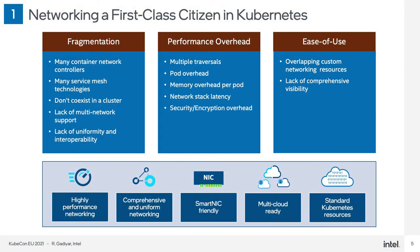Let's talk about Kubernetes networking. There are three main challenges here: fragmentation, performance overhead, and ease of use — or lack thereof. If you double-click on fragmentation, you will notice there are many container network controllers, many service mesh technologies, and these do not coexist in a cluster together. Also, there are issues like lack of multi-network support and lack of uniformity and interoperability.